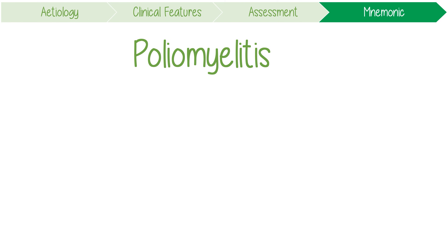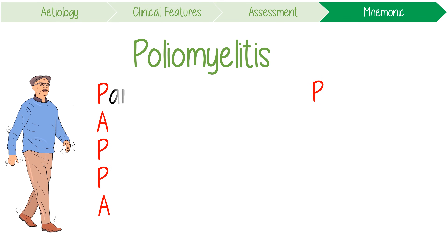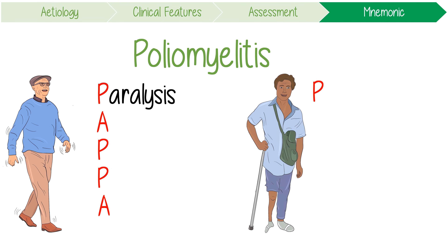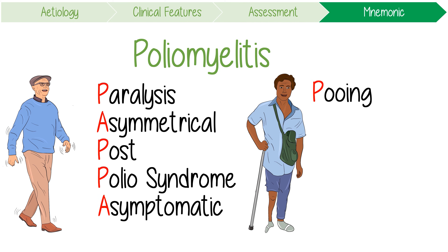To remember the key clinical features of poliovirus, remember Papa Polio. It can cause acute flaccid paralysis which is usually asymmetrical. The most frequent complication observed following infection is post-polio syndrome. However, most of the time infections are asymptomatic or cause minor abdominal features like excessive pooping.